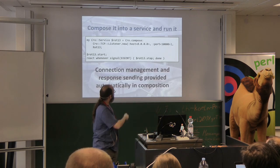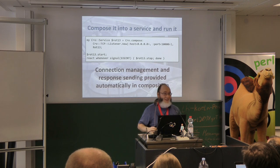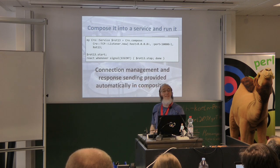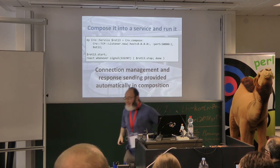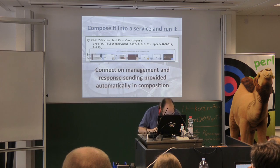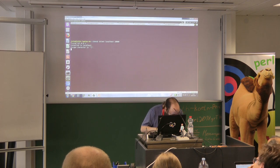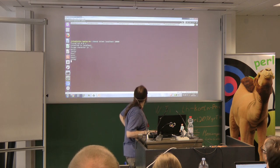Now let's compose this with a TCP listener — that gives us a Crow service object. Someone might have just noticed why Crow is called Crow: read this declaration... 'micro service.' And I can't believe I've gotten this far into a talk without a demo, so let's do one. Here it is running, let's telnet to it and write some words... and there we go, it works.